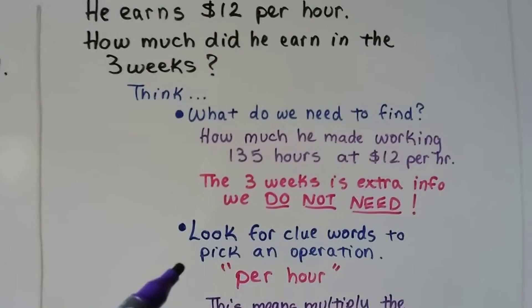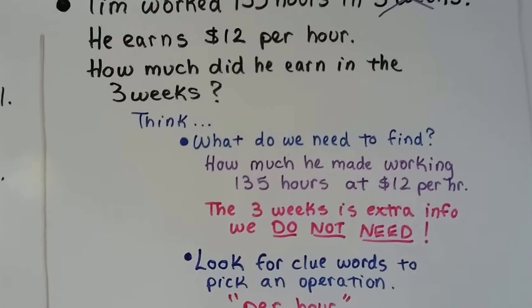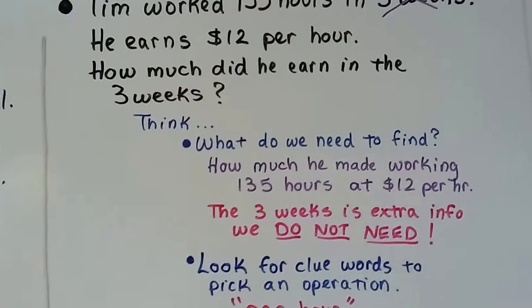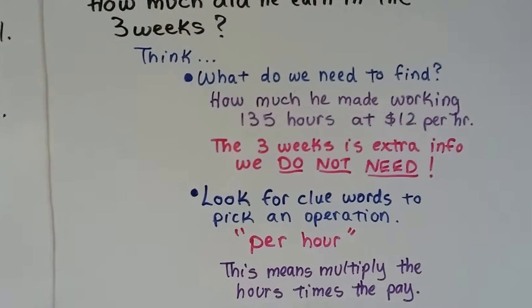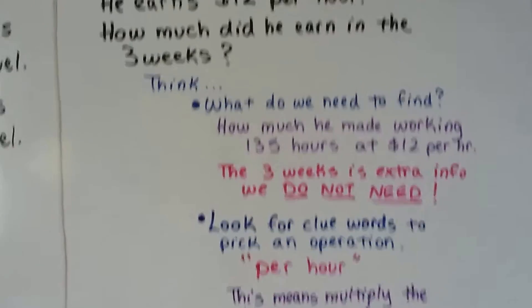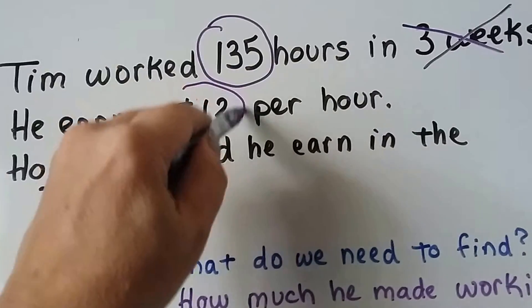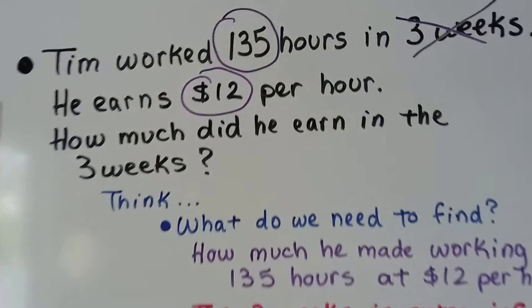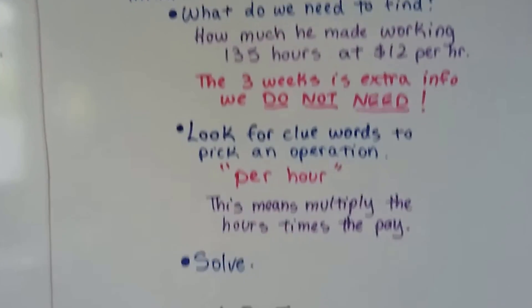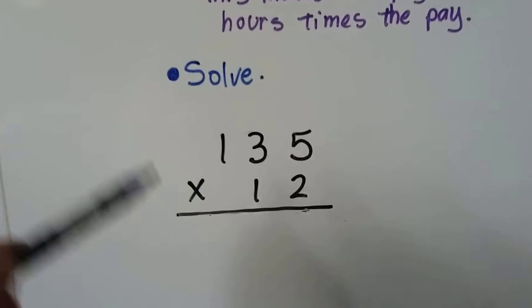Now we look for clue words to pick an operation and it says 'per hour.' So that tells us that means multiply the hours times the pay. So here we have the hours, 135. We have $12 per hour. We need to multiply those.